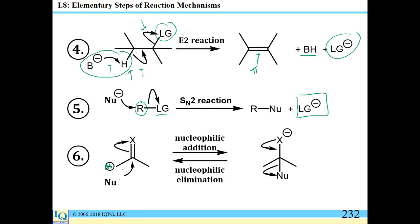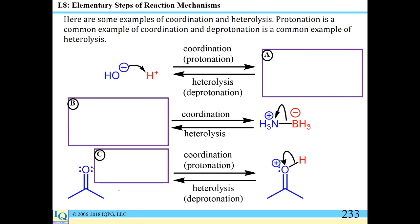Nucleophilic addition often involves a negatively charged nucleophile pushing electrons towards a carbon, often one that is partially positively charged in a polar double bond. Nucleophilic elimination happens when the negative charge on some atom is pushed into that space with elimination of some leaving group, to reform the pi bond in the opposite direction. Since these arrow-pushing steps are so important towards understanding many reaction processes in organic chemistry, we should take a closer look at some of these types of elementary steps.